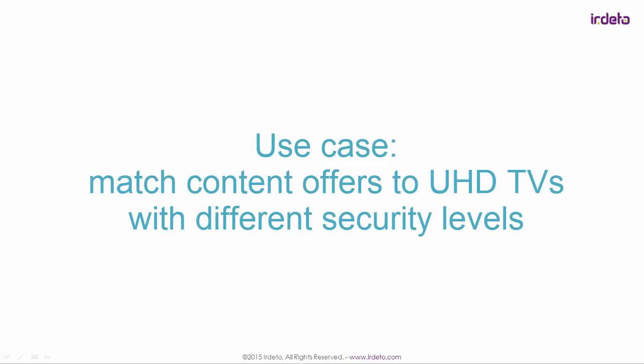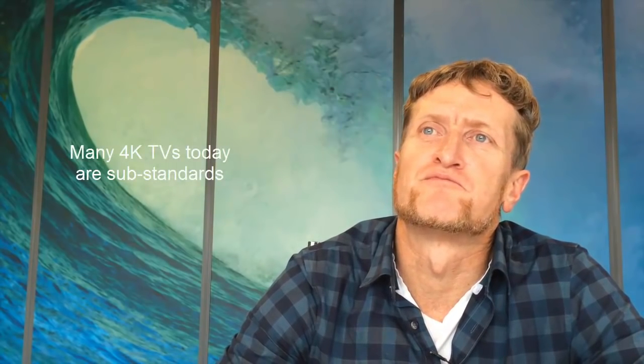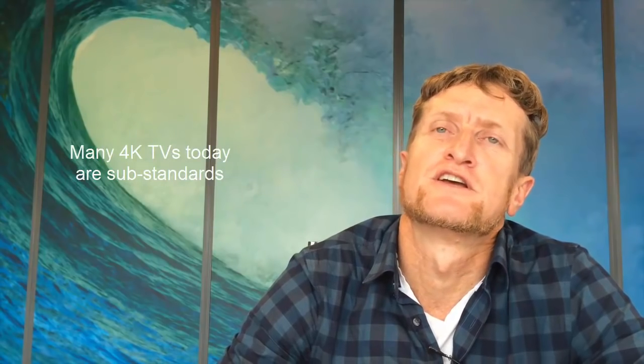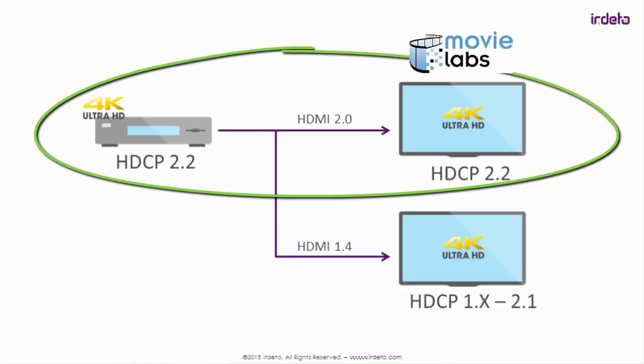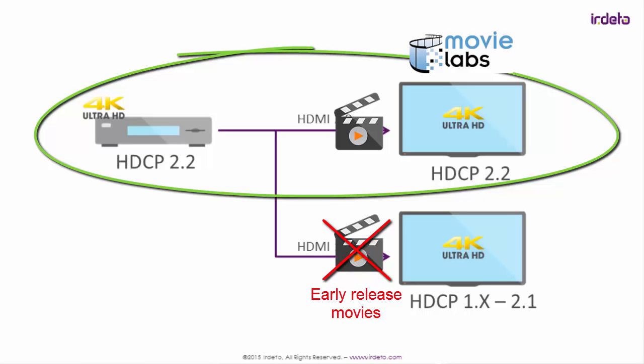One use case is matching content offers to Ultra HD TVs with different security levels. One interesting aspect of 4K is the way televisions are shipping. 4K televisions are shipping rapidly — 60,000 a day is the last statistic heard. A lot of these are shipping with substandard 4K implementations, especially the security level on HDMI. The majority of these TVs are on HDCP 1.x. MovieLabs requirements for premium Ultra HD content in the early release window require absolutely HDCP 2.2, which means consumers with those older televisions are not going to be able to watch early release box office movies.